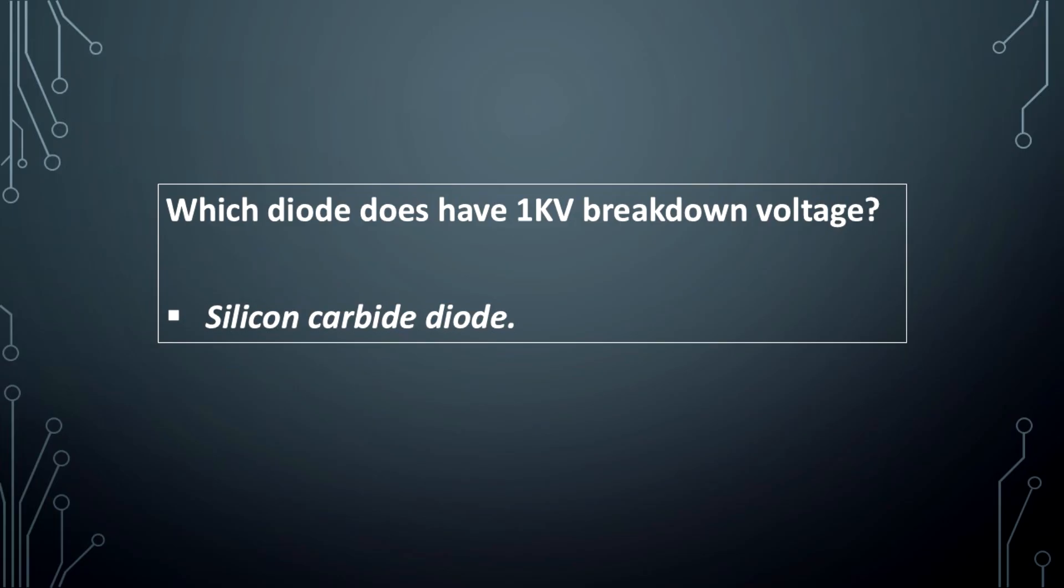Which diode has graded doping? Step recovery diode. What is the transferred electron device? Gunn diode. Which diode does have 1kV breakdown voltage? Silicon carbide diode.